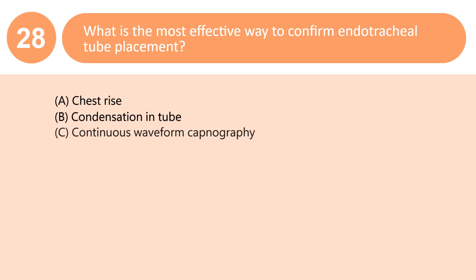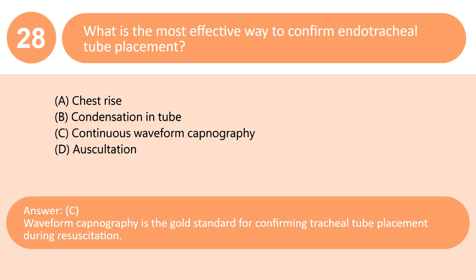What is the most effective way to confirm endotracheal tube placement? A. Chest rise. B. Condensation in tube. C. Continuous waveform capnography. D. Auscultation. Answer: C. Waveform capnography is the gold standard for confirming tracheal tube placement during resuscitation.